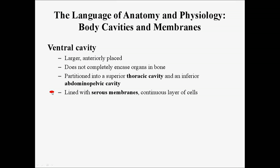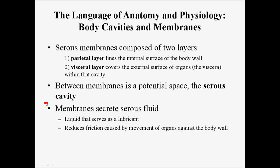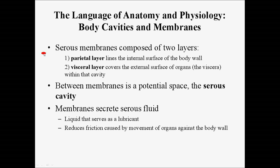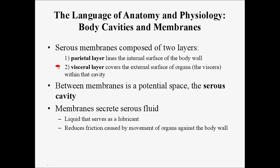The ventral cavity is also lined with serous membranes, which are continuous layers of cells providing protection to those cavities. Each serous membrane — and keep in mind that serous membrane is a general term — is made up of two layers. You have the parietal layer, which lines the internal surface of the body, and the visceral layer, which covers the external surface of organs — hence viscera, which means organs — within that cavity.